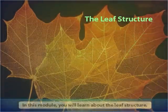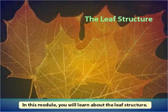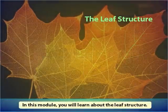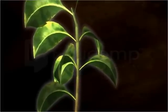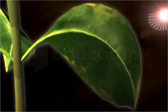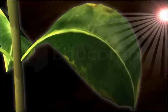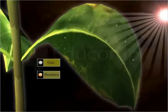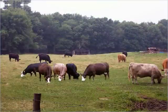Leaf structure. In this module you will learn about the leaf structure. The leaf is sometimes referred to as one of the principal factories of the world because it is the organ in which photosynthesis occurs. It is also the organ where other food substances such as fats and proteins are formed. These substances eventually become the food of all other living organisms, either directly or indirectly.